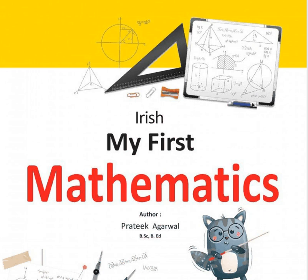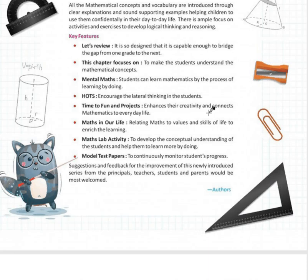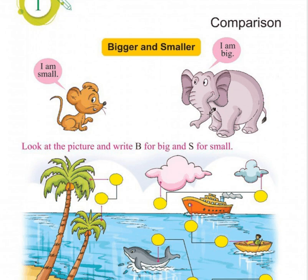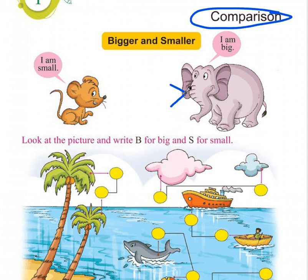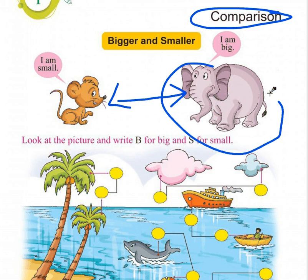Welcome. We are going to study standard first mathematics and the chapter name is Comparison. Comparison ka matlab hota hai jab koi do cheezein ya do se adhik ke beech mein compare kiya jata hai — jaisay ki yeh cheez badi hai aur yeh cheez choti hai.